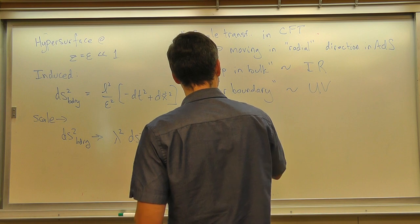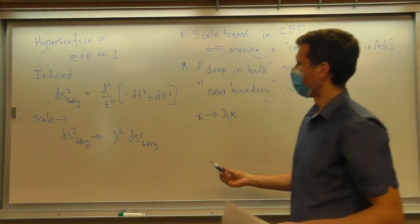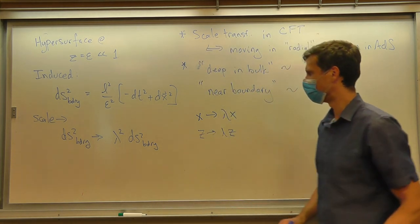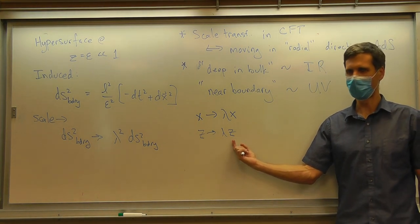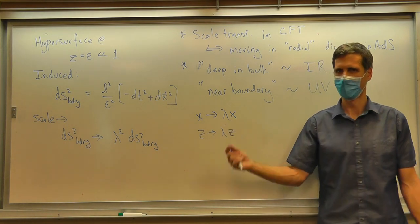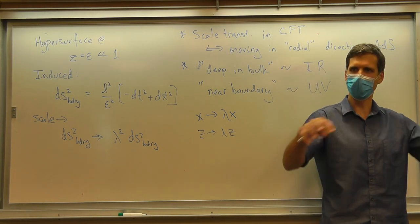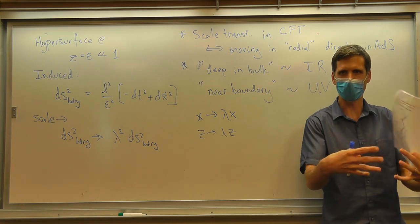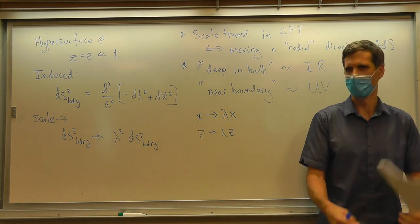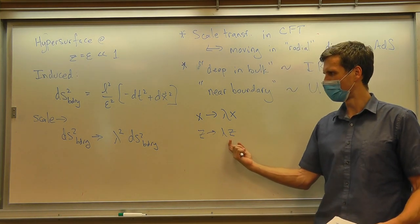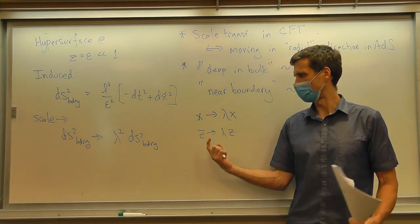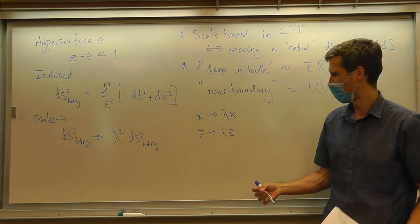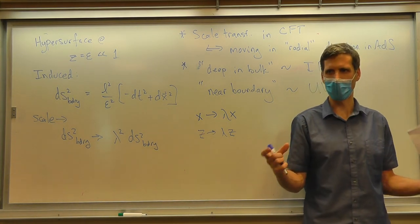The scale transformation rescaled everything, including the radial direction. Say we take lambda equals two. We take some state in the CFT — a blob of stuff — and perform the scale transformation. From the point of view of anti-de Sitter space, we're talking about something happening deeper in. From the CFT point of view, we're now scattering blobs that are twice as big.